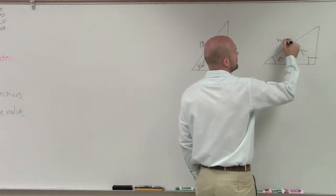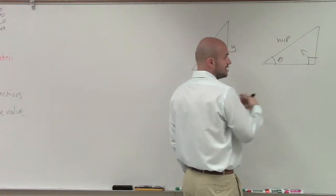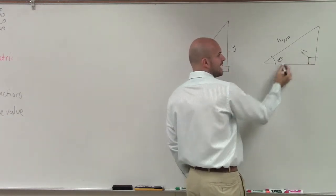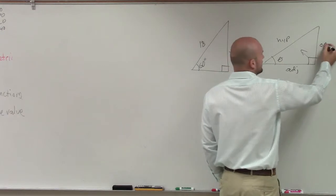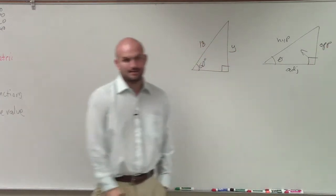Across from the right angle is the hypotenuse. Between our angle and the 90 degree angle is the adjacent side. And this is the opposite side.